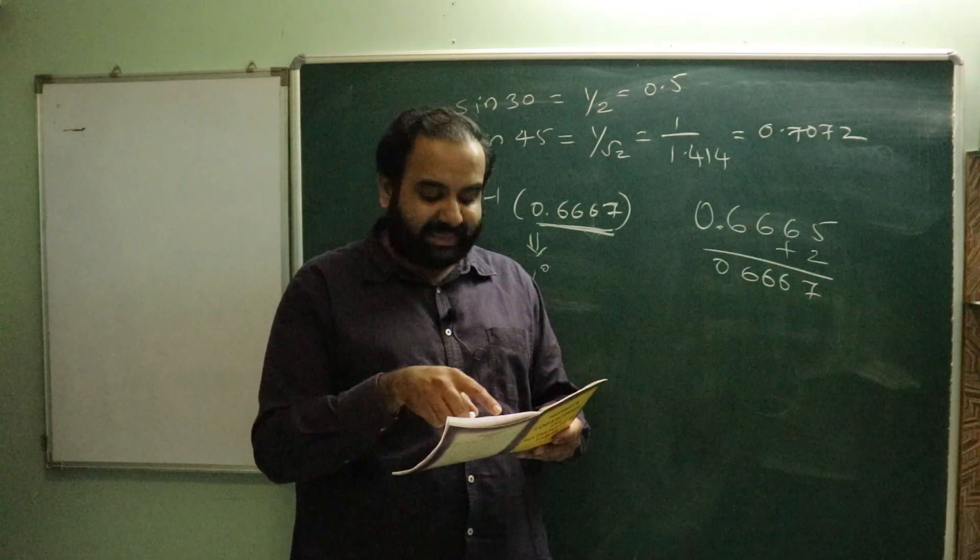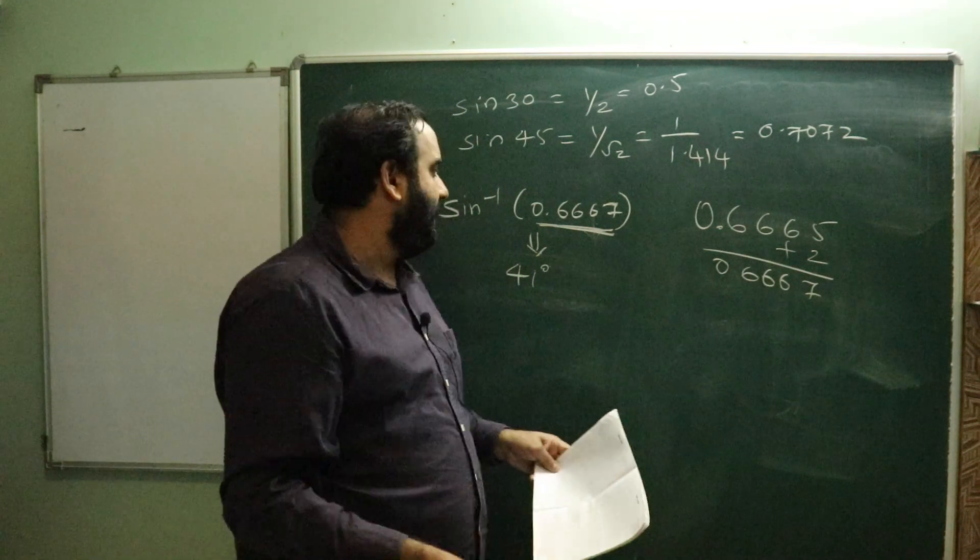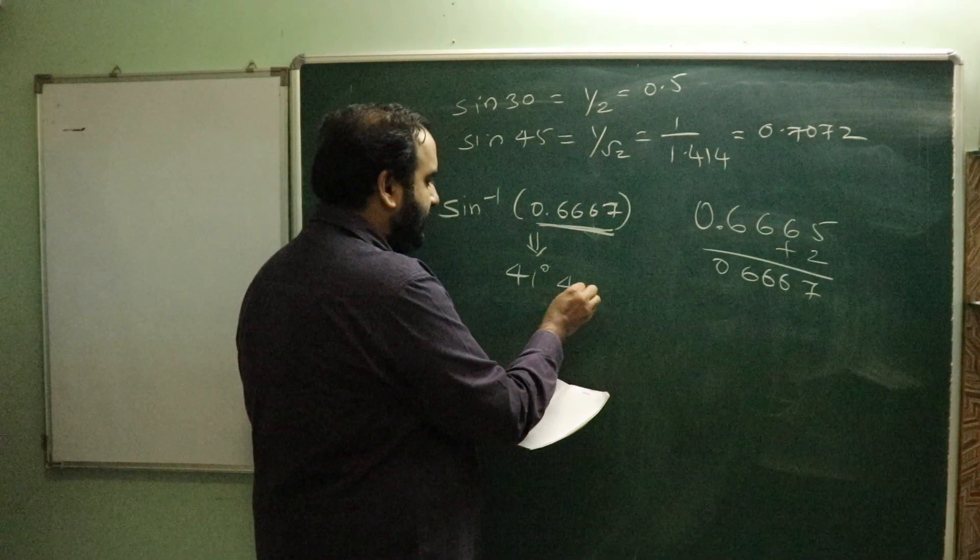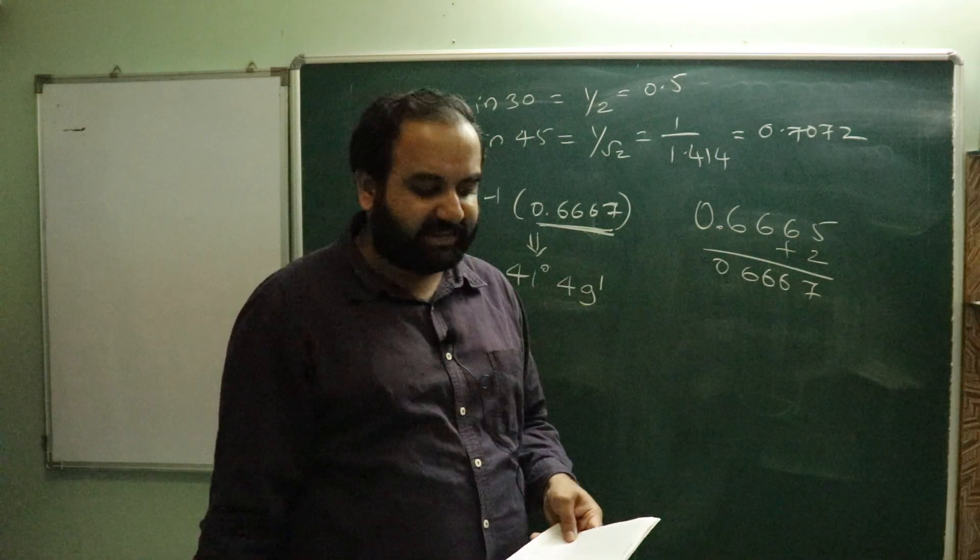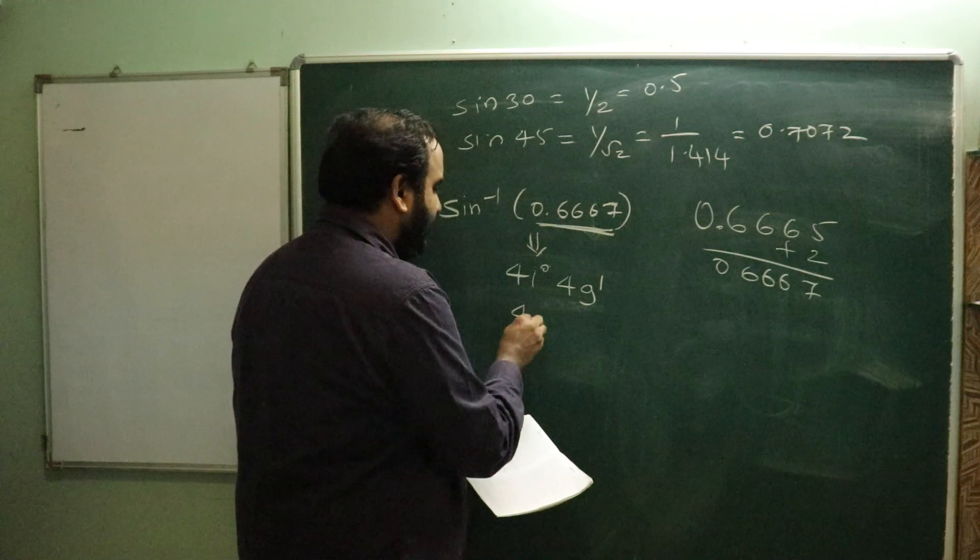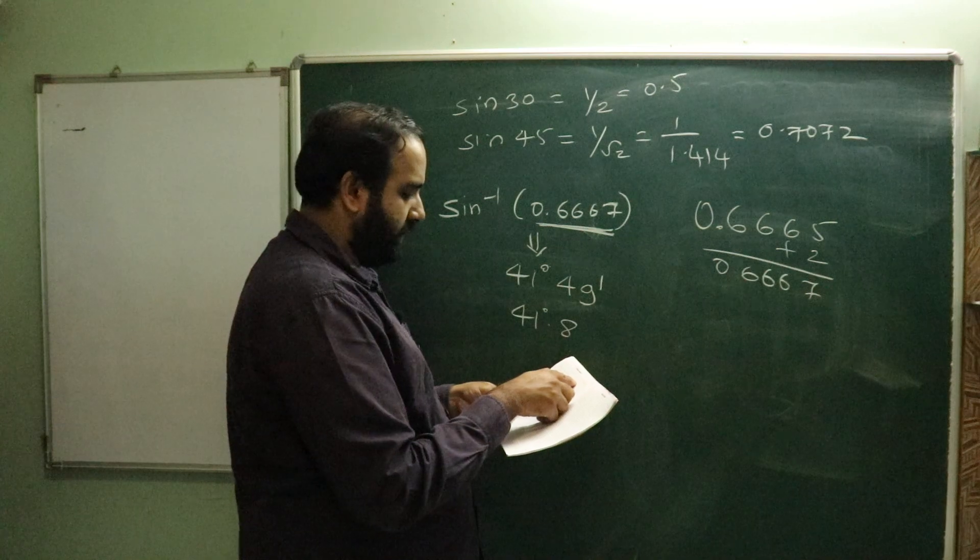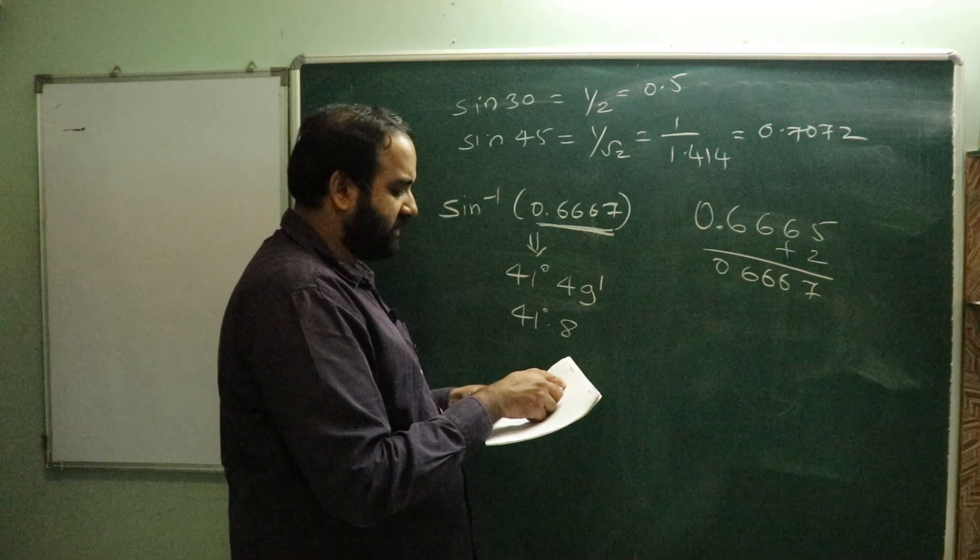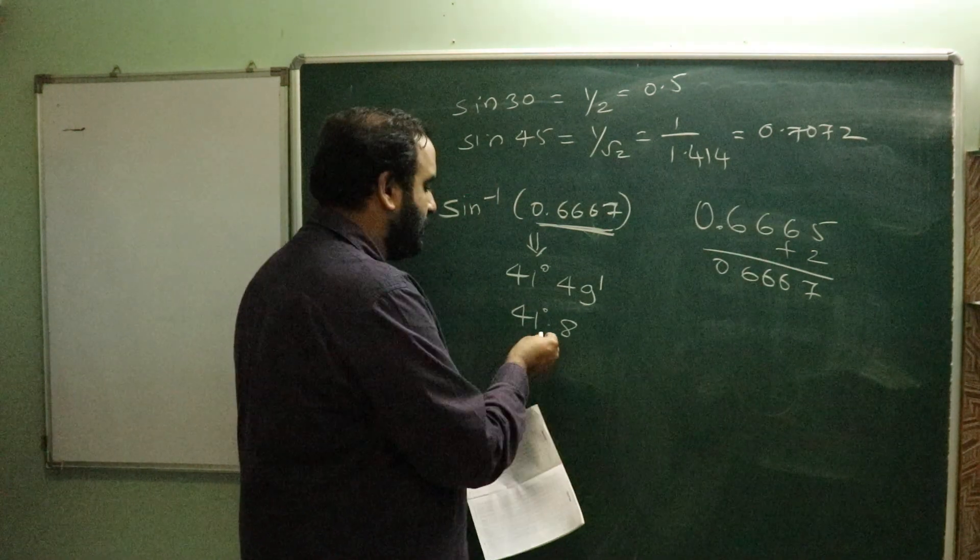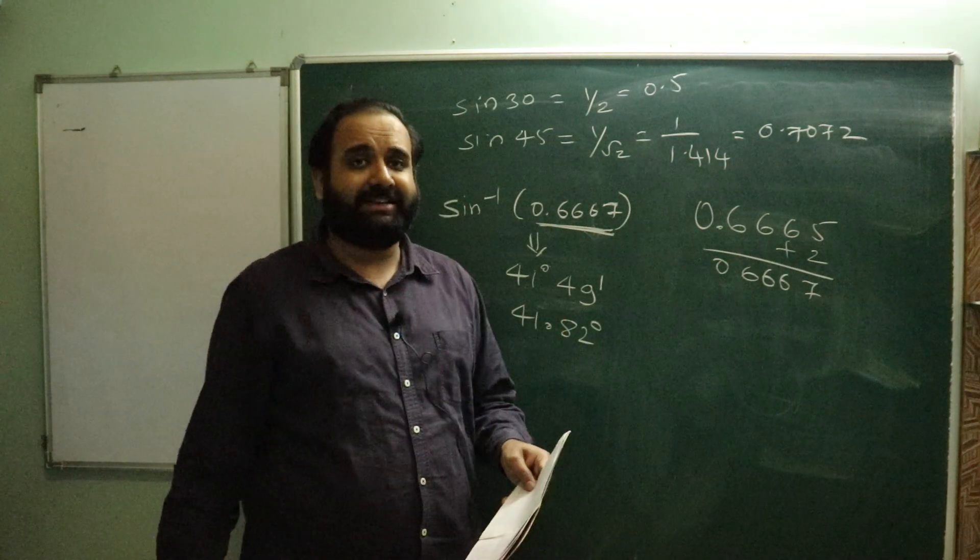Plus one. The right side shows 48 minutes, that is 0.6665 corresponds to 48 minutes. And we added the mean difference, so we have to add that also. So the answer comes out to be 41 degree 49 minutes. Is this clear to y'all? Also, the corresponding can be 41 degree 0.8, approximately around 0.02, so it comes out to be 41.82 degree. I hope you all understood how to find out the sine inverse.